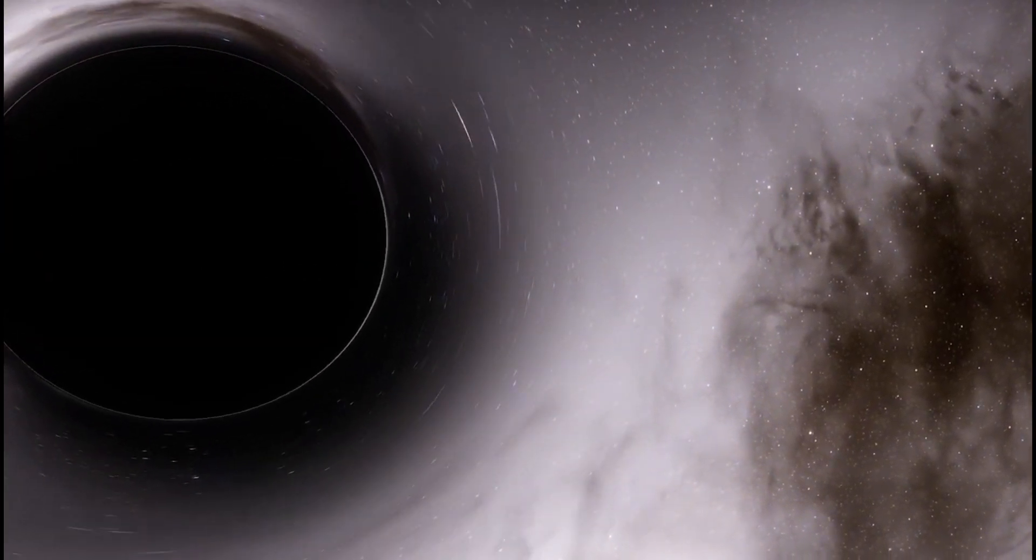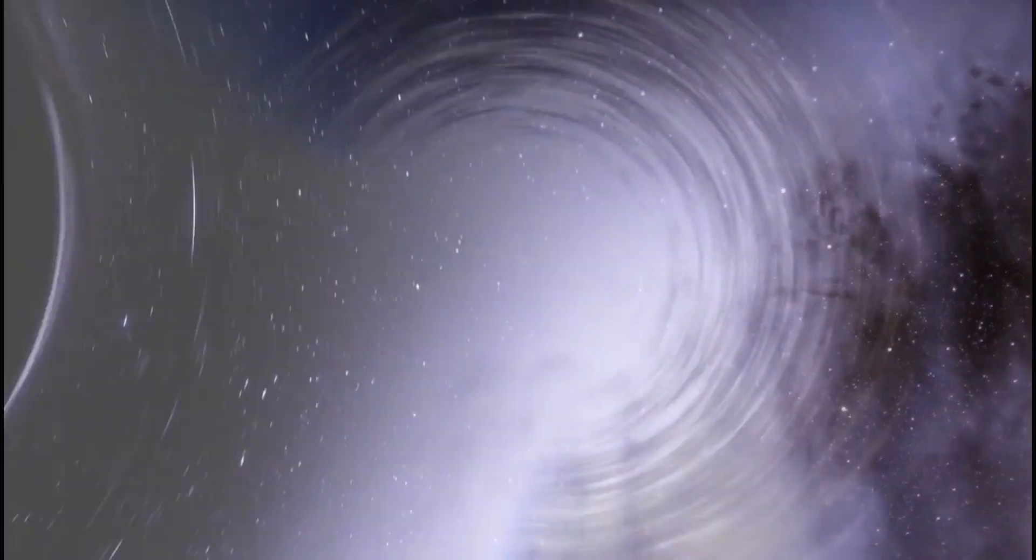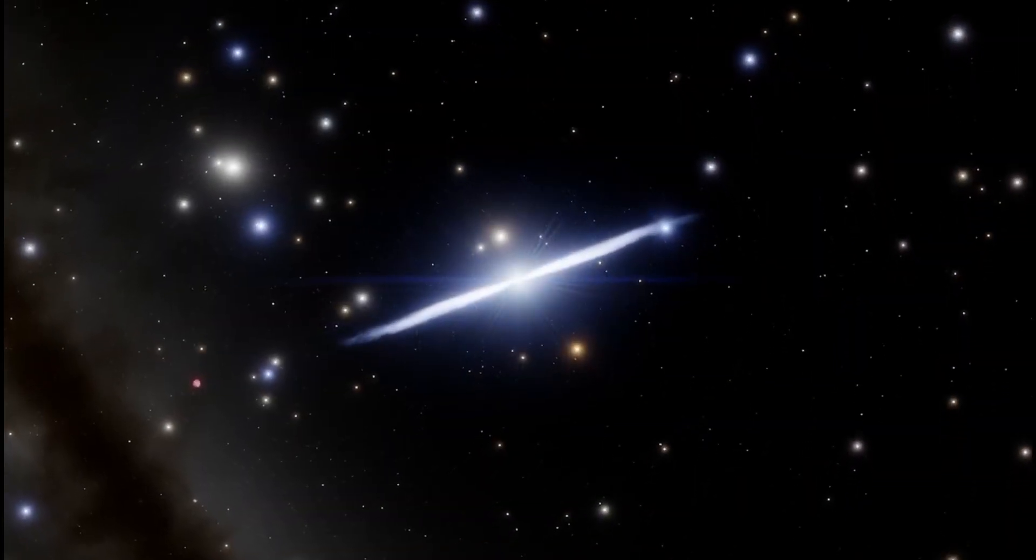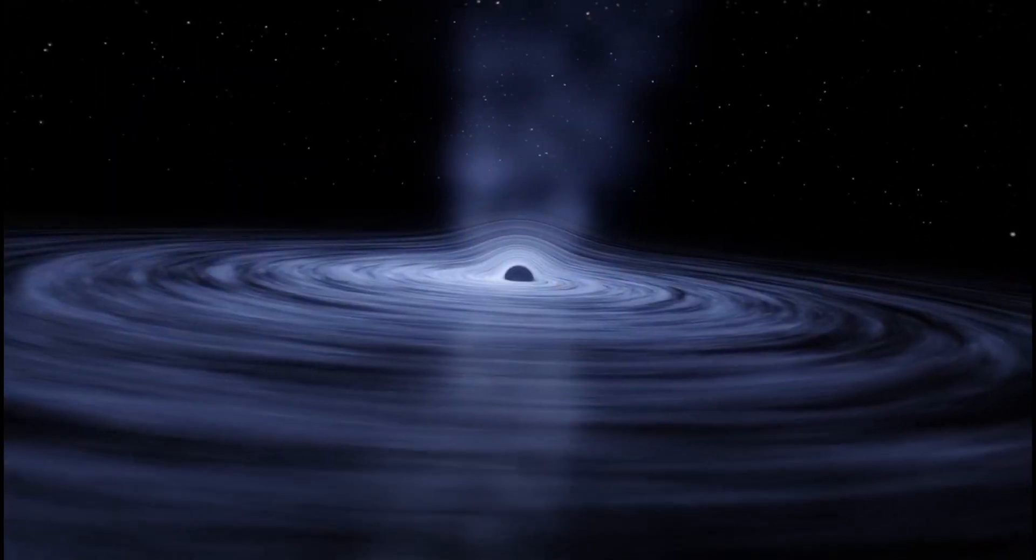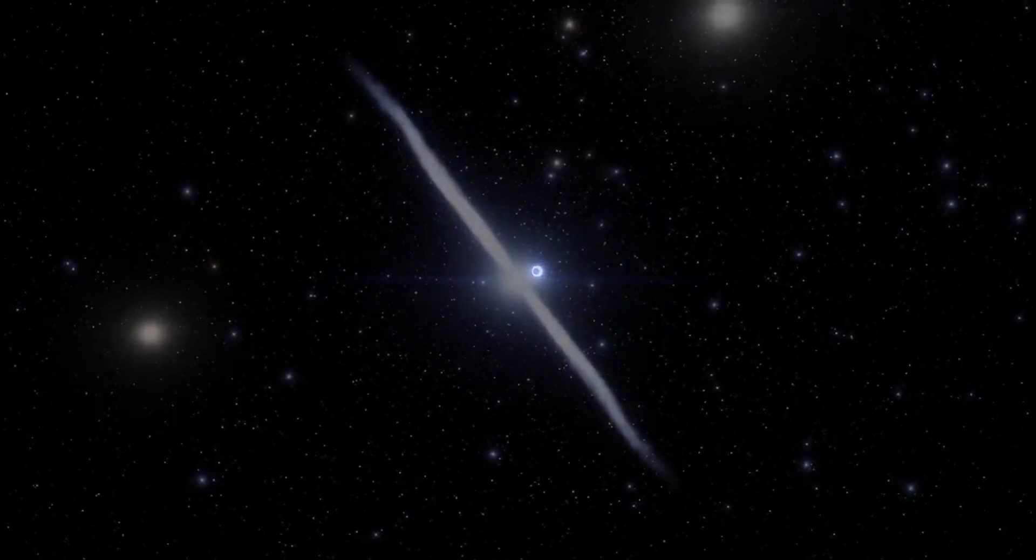As this material approaches the event horizon, it forms an accretion disk, where friction and gravitational forces heat the matter to millions of degrees. This process generates powerful magnetic fields that can propel charged particles away from the black hole at incredible speeds, creating jets that shoot out perpendicular to the accretion disk.